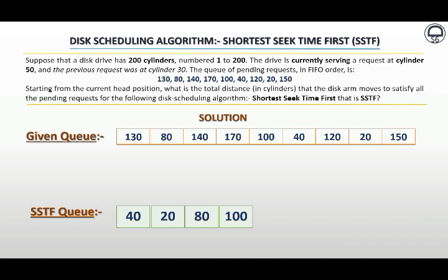And so on. Therefore, applying the SSTF disk scheduling algorithm, the rearranged queue of pending requests will be: 40, 20, 80, 100, 120, 130, 140, 150, and 170.